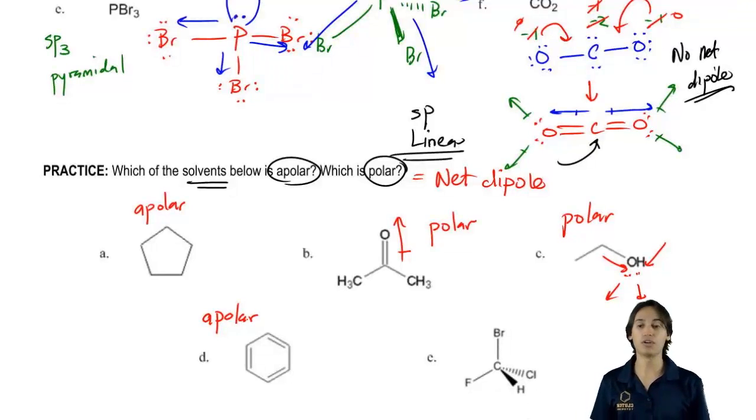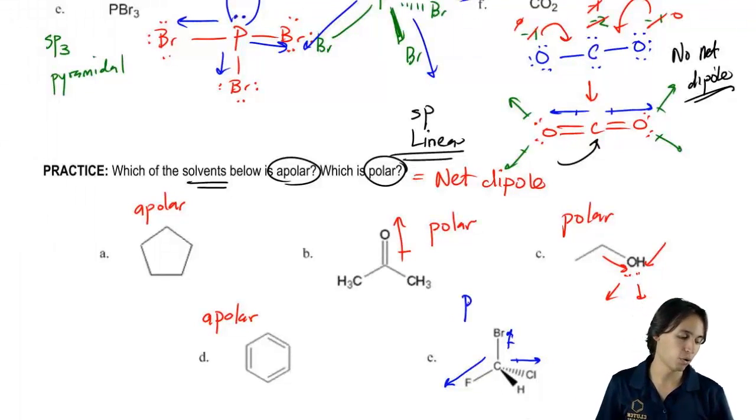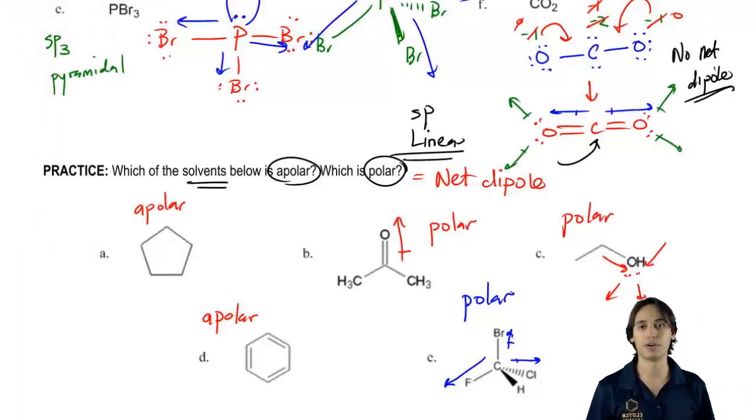And then finally over here, we have a carbon that has a bunch of halogens on it. Remember that halogens are all pretty polar, but they're all of differing strength. So that means that this F would have a really big dipole, and then the chlorine would have a little smaller dipole, and the bromine would have the smallest dipole, and then the H just doesn't have a dipole. So would this have a net dipole? Yes. This would be polar because they're not perfectly canceling out, so I know that this is a polar compound.